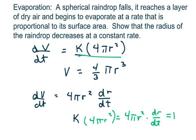Which equals k, so k equals the derivative of r with respect to t. That shows that the radius of the raindrop decreases at a constant rate.